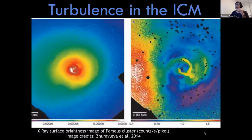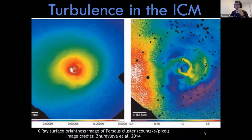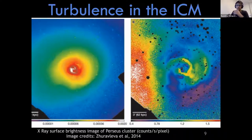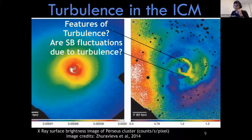Looking at the Perseus cluster: on the left is the X-ray surface brightness image, and on the right are the fluctuations obtained by dividing out the mean at each radius. You see sloshy features in the fluctuation image. One way to determine whether these are truly due to turbulence is to measure the turbulent gas velocities. The most obvious method for measuring velocities in a gas is the Doppler shift technique — but for X-rays we need space-based telescopes since the atmosphere blocks X-rays.